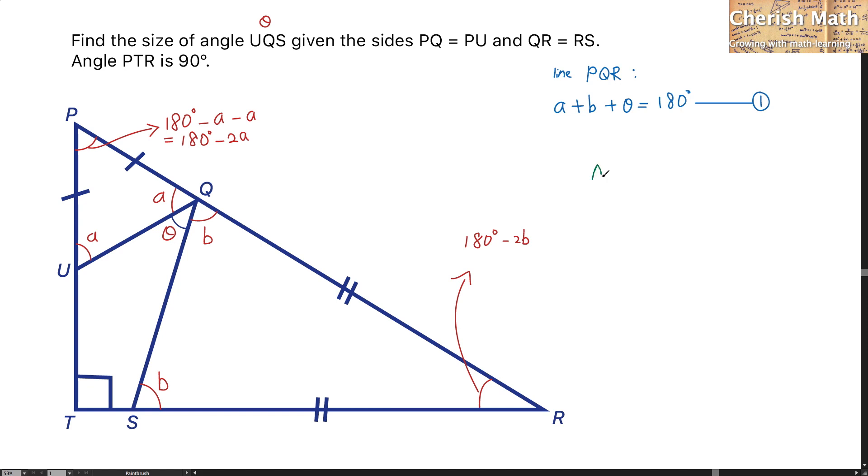Now I'm referring to triangle PRT, which is the biggest triangle here. The sum of each corner would be 180 degrees. I'm going to sum up 180 degrees minus 2A add up with this angle which is 180 degrees minus 2B and add the right angle at this corner which is 90 degrees, and I get 180 degrees.